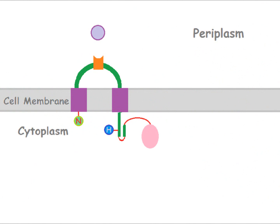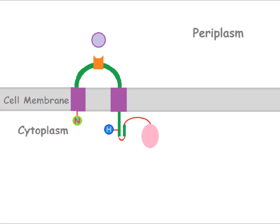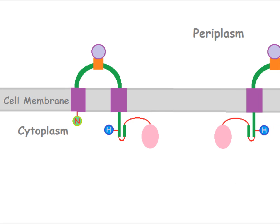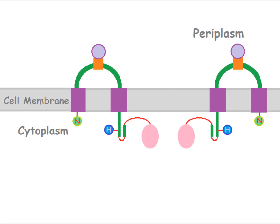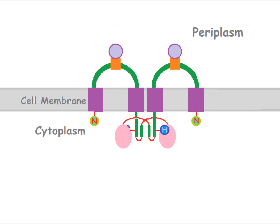The first component of the basic signaling system is the histidine kinase. When an external stimulus hits the input domain of the histidine kinase, the signal moves through the membrane to the transmitter domain. This causes a morphological change in the catalytic domain, shown here in pink, allowing the histidine kinase to dimerize.